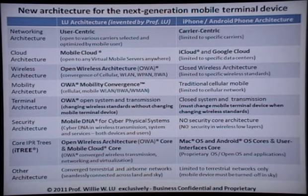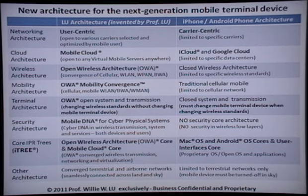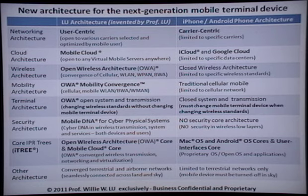These four trees are very important from a legal point of view to protect intellectual property. Apple has two trees — user interface and OS. Google has OS trees. Under my architecture, we focus on transmission trees. My technology's architecture — open wireless architecture and mobile cloud core — belongs to the transmission tree. All of it converges to wireless transmission, networking, and virtualization.